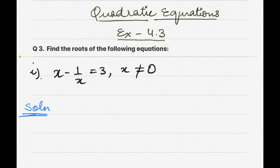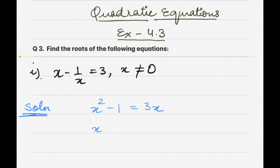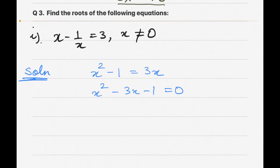For the solution, we take the LCM: x minus 1/x becomes x² - 1 = 3x. We need to write the quadratic equation in the form ax² + bx + c = 0, so bringing 3x to this side gives us x² - 3x - 1 = 0.